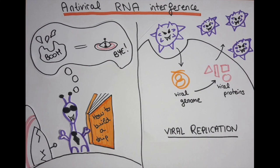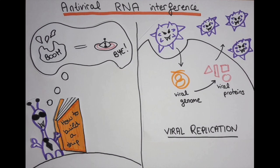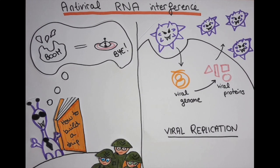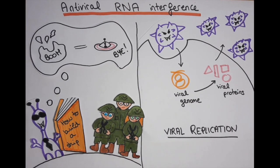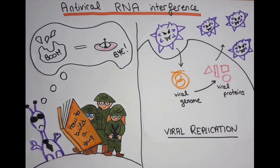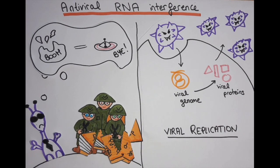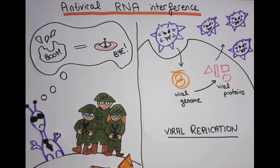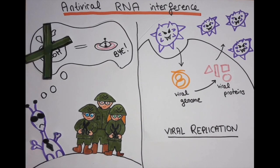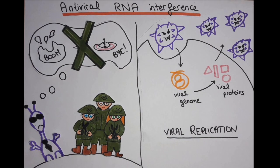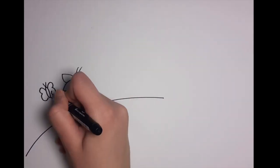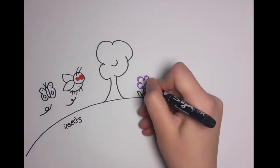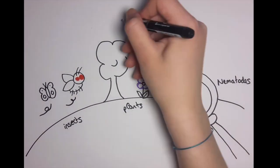In our story, there are some inhabitants on the planets, and especially a group of soldiers. Each time an alien arrives on their planet, they take his alien instruction manual and tear it into pieces. Without this, the alien is incapable of building his ship and cannot continue his conquest of the universe. This strategy is used by many organisms, like insects and plants, and is called RNA interference.